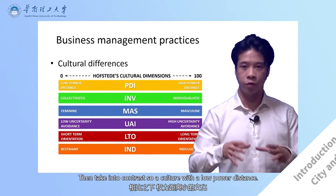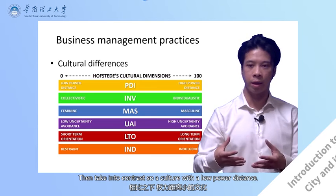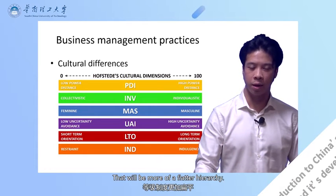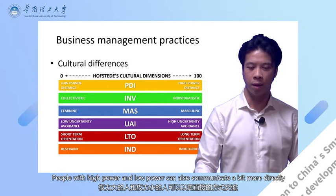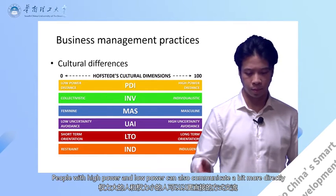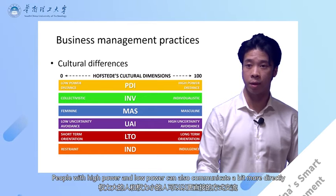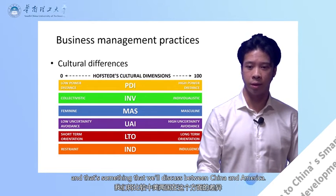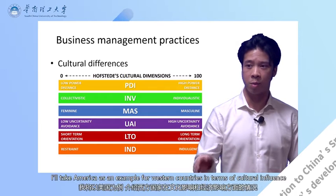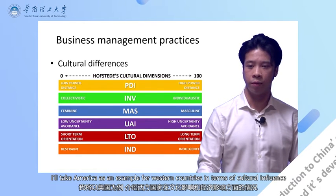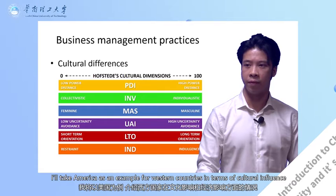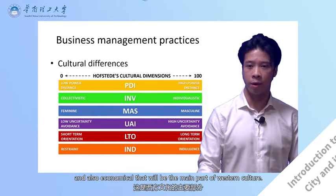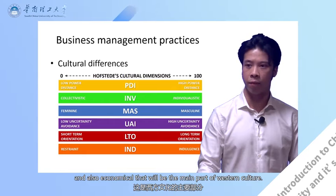In contrast, a culture with a low power distance would be more of a flat hierarchy, where people with high and low power can communicate a bit more directly. That is something we will discuss between China and America. I will take America as an example for Western countries, since in terms of influence — both cultural and economical — they would be the main part of Western culture.